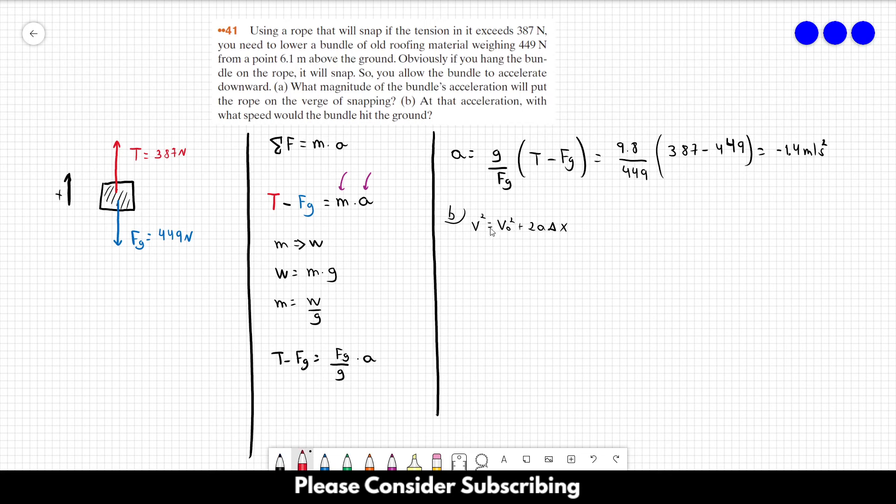The initial speed is 0. So the final speed is equal to the square root of 2 times the acceleration times delta X. So in this case, if we choose that upwards as positive, this would be 6.1 meters at the starting position and 0 meters at the end of the movement. So delta X is equal to minus 6.1 because it's the final position minus the initial position. So delta X is equal to minus 6.1 meters.